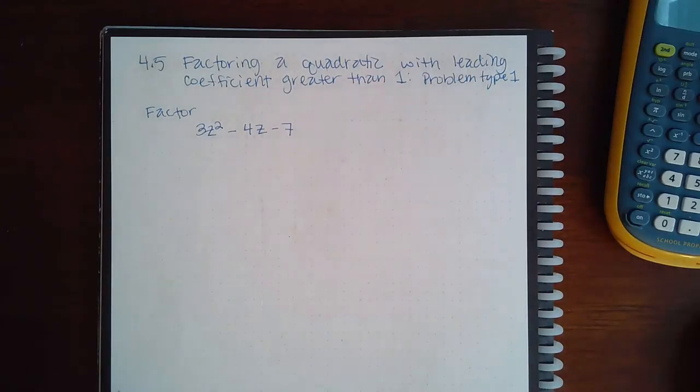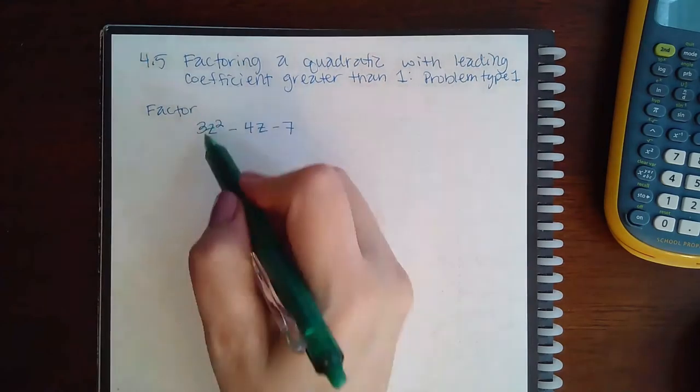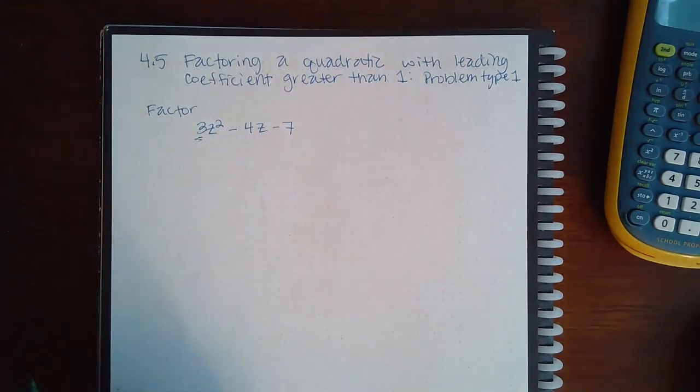Here we have 4.5 factoring a quadratic with leading coefficient greater than 1, problem type 1. So this is where we now have a number in the front, and so this is a little bit harder than before.